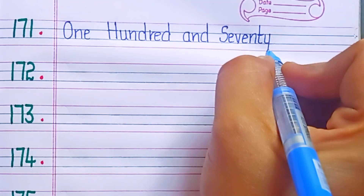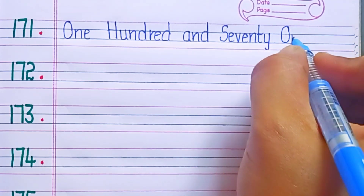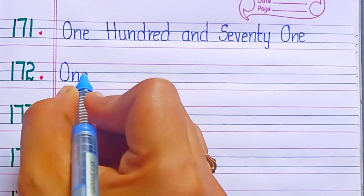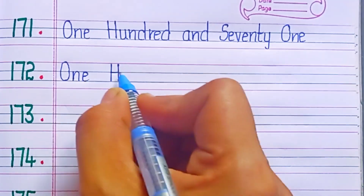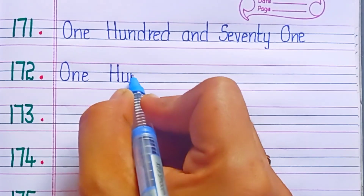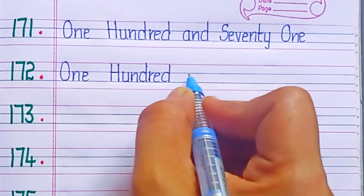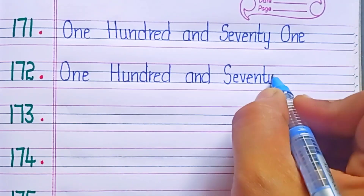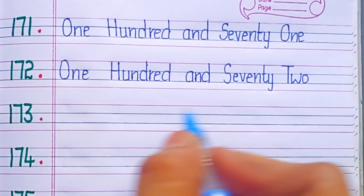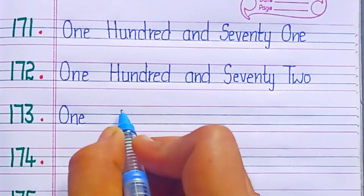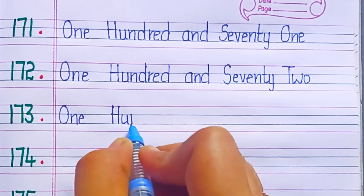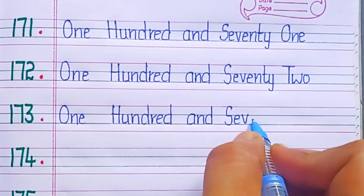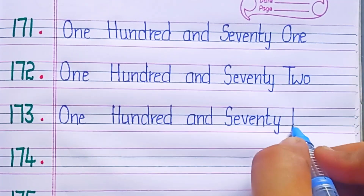One hundred and seventy one. One hundred and seventy two. One hundred and seventy two: S-E-V-E-N-T-Y, 70, T-W-O, 2.